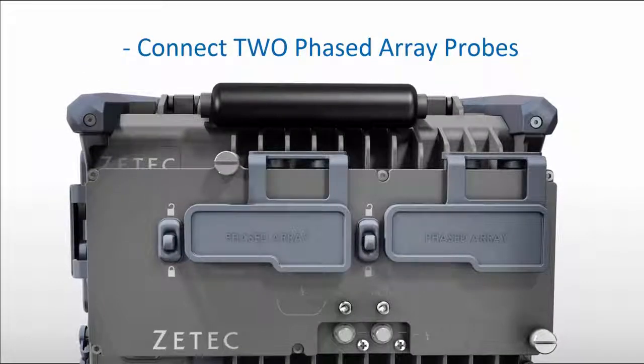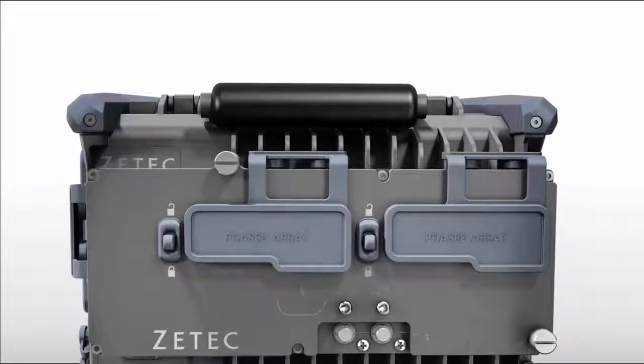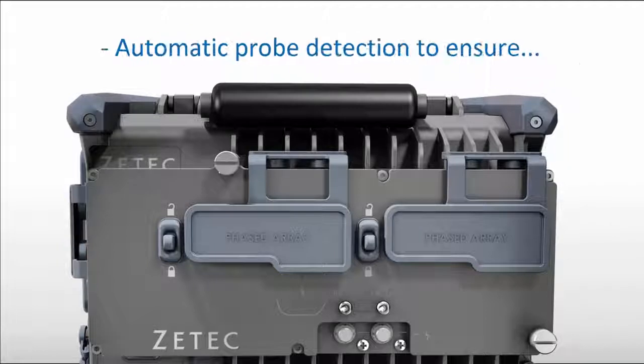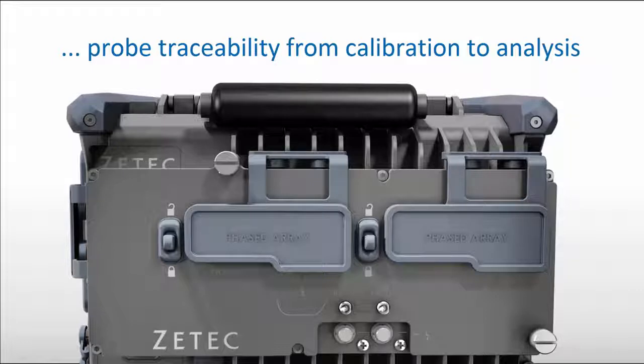The probe splitter module can be conveniently mounted on the back of the TOPAZ-16 unit to enable the connection of two phased array probes. The TOPAZ-16 unit will detect the dialog information from the two phased array probes and ensure probe traceability from calibration to data analysis.